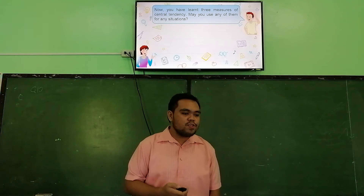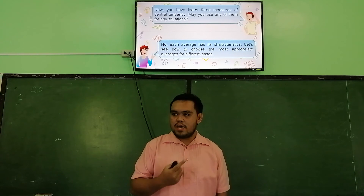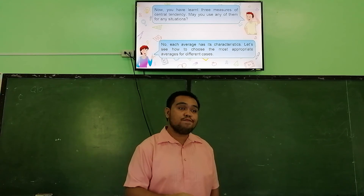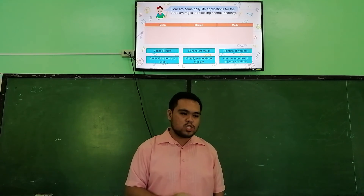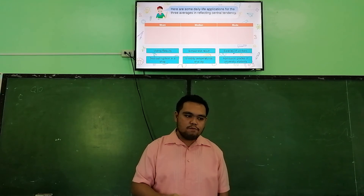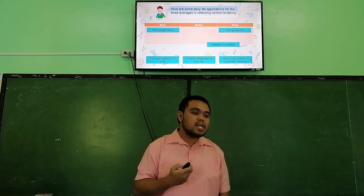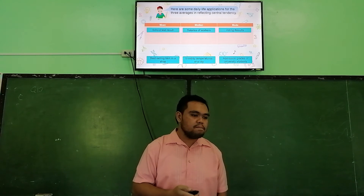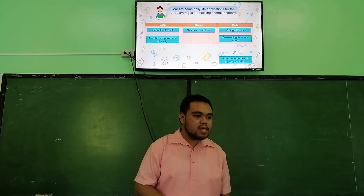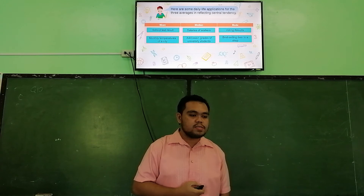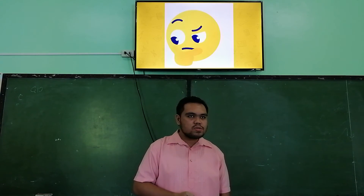Now you have learned the three measures of central tendency. Each measure has different characteristics, so you cannot use them interchangeably in every situation. For example: voting results belong to the mode; school test results use the mean; salaries of workers use the median; best-selling items use the mode; monthly temperature of a city uses the mean; and admission grades of university students use the median.